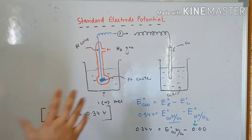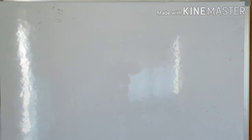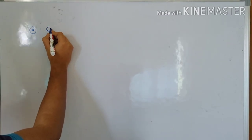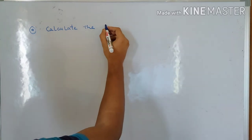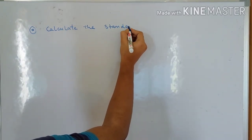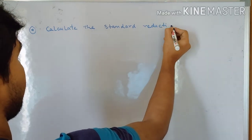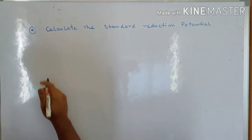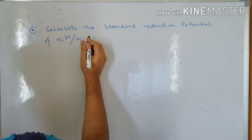Now let us solve a problem. Calculate the standard reduction potential of the Ni²⁺/Ni electrode, when the cell potential for the cell: Ni | Ni²⁺(1M) || Cu²⁺(1M) | Cu is 0.59 V. The given information is: E⁰(Cu²⁺/Cu) = 0.34 V.